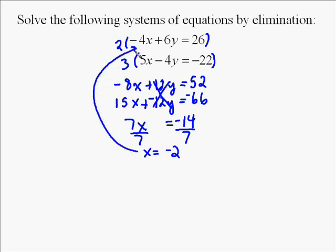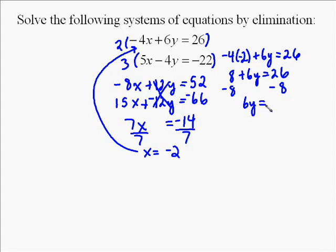Now we need to just go back and do the same process we've done over and over again, which is find the y value. You plug in negative 2 for x. It doesn't matter which equation you pick. I'm just going to pick the first one. I put in negative 2 in there for x plus 6y. Now we solve. Negative 4 times negative 2 is a positive 8. So that gives me 8 plus 6y equals 26. Then we subtract 8 from both sides. That gives us 6y equals a positive 18. Divide both sides by 6, and you get y equals a positive 3.